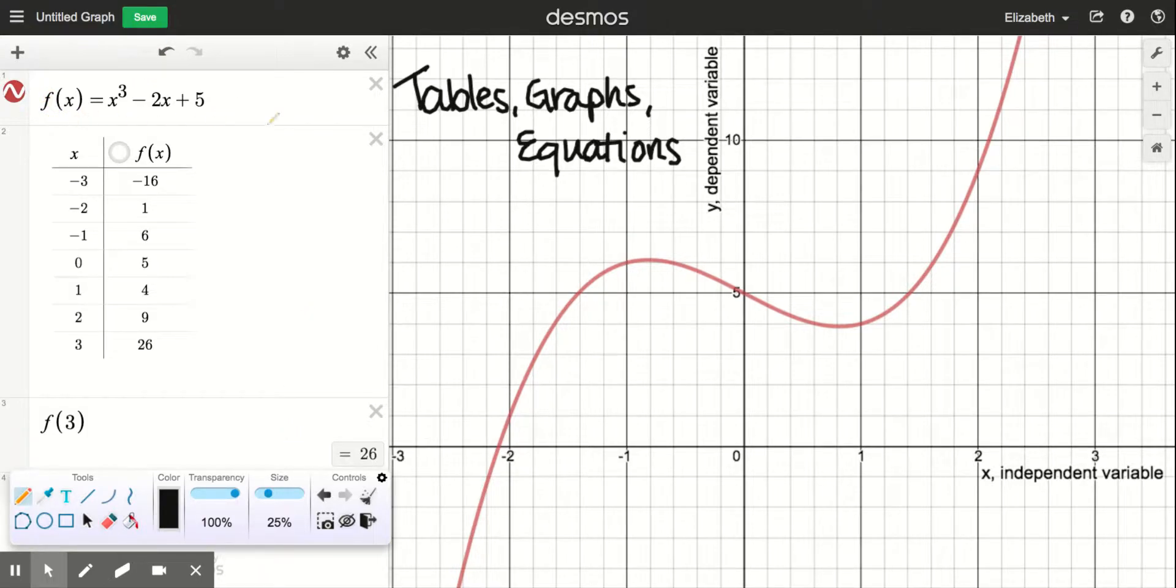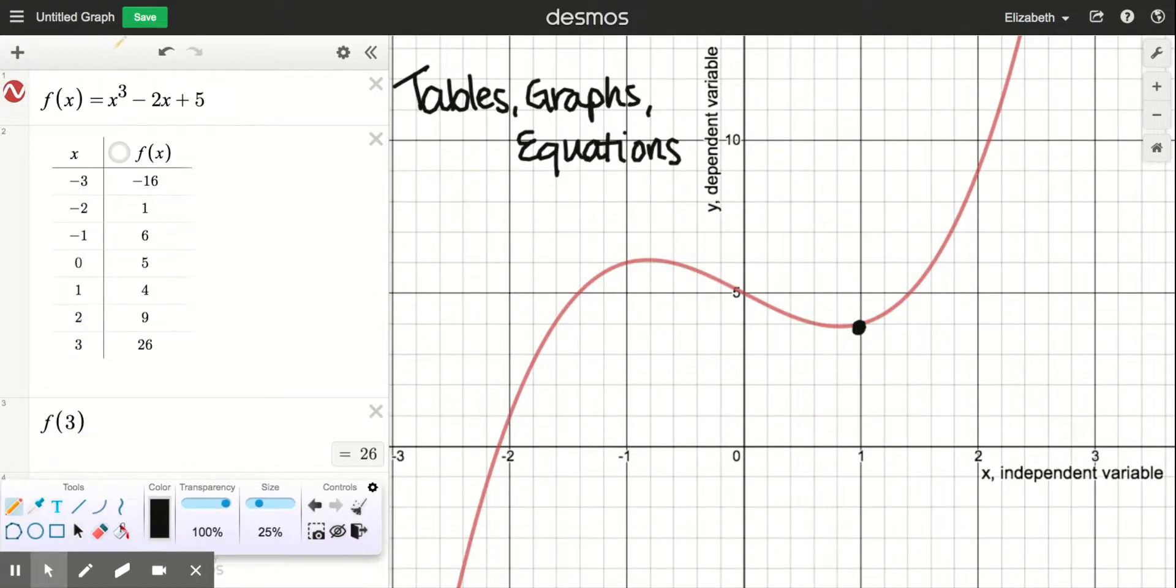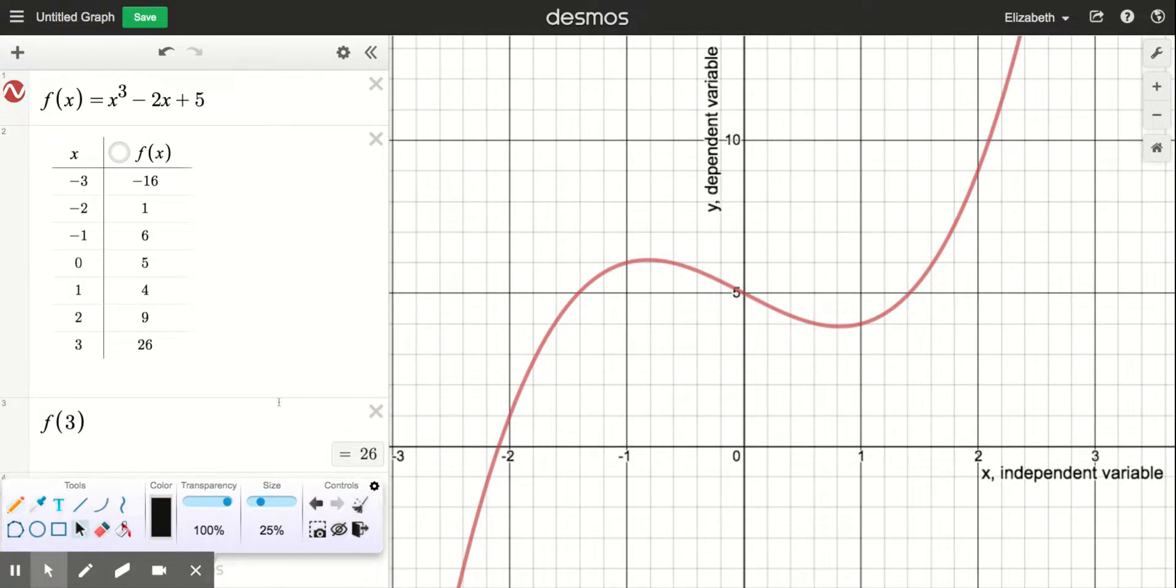The equation can give us some things that can't be as easily displayed on the graph. If we're not using Desmos, it might be difficult to see what the y value is when x is 1, but that's why the equation can help - we can just plug in 1 for x and see what y value we would get out.